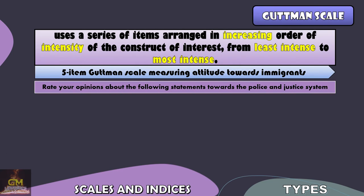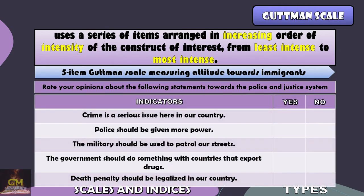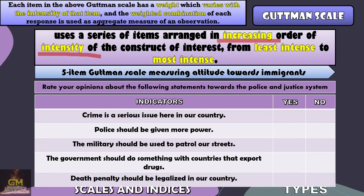Remember that a Guttman scale may be binary or Likert depending on the preference of the researcher. For this example, this is a binary scale that would determine the attitude or opinions of the respondents towards the given indicators. In a Guttman scale, the items are arranged in increasing order of intensity. As such, each item has a weight which varies with the intensity of that item, and the weighted combination of each response is used as an aggregate measure. With this in mind, we could assign values for each of the indicators — the first one could be a two, the second could be a four, and so on.